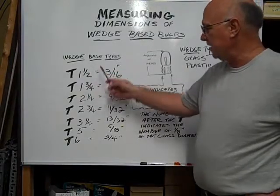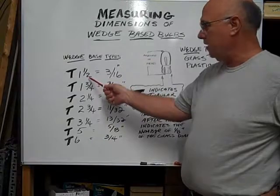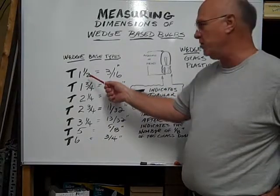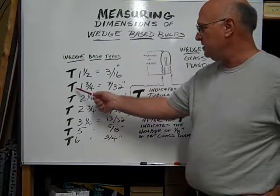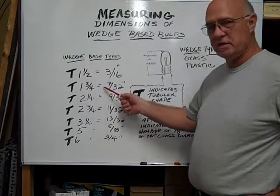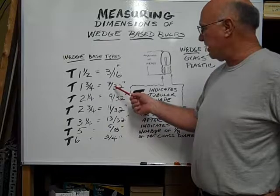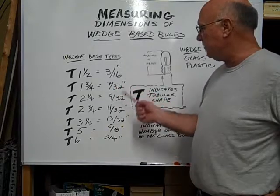So if this is actually a T two, it would be a quarter of an inch, it would be two eighths. But this is a T one and a half which is equal to three sixteenths. A T one and three quarter is equal to seven thirty-seconds of an inch.